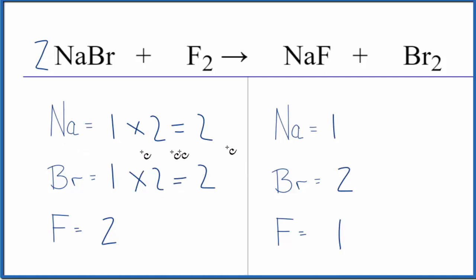Now we could do the sodium, we could put a two in front of the NaF. One times two, that would give us two Na's. Those are balanced. And the one F times two, that gives us two, and those are balanced.